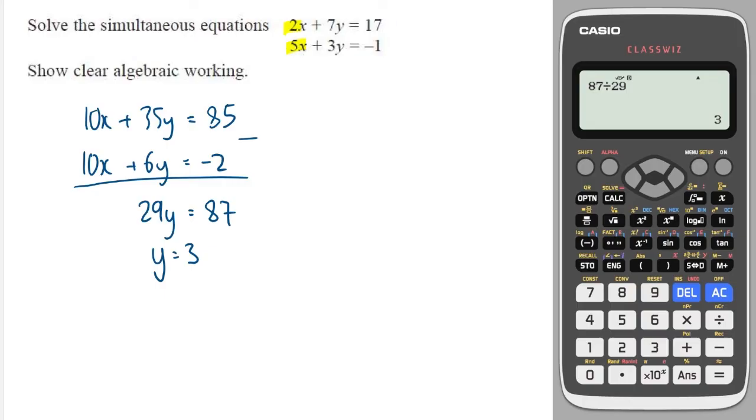We then pick the top equation or the bottom, but I'm going to go with the top in this case. And I substitute 3 in for y. This gives me that 2x plus 21 is equal to 17. So 2x is equal to minus 4. So x is equal to minus 2. And we are done.